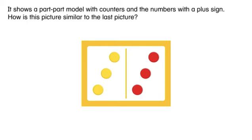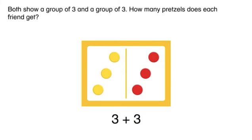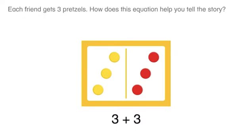It shows a part-part model with counters and the numbers with a plus sign. How is this picture similar to the last picture? Both show a group of three and a group of three. How many pretzels does each friend get? Each friend gets three pretzels.